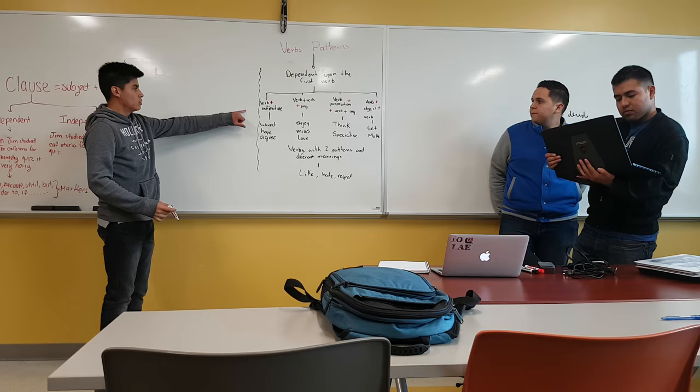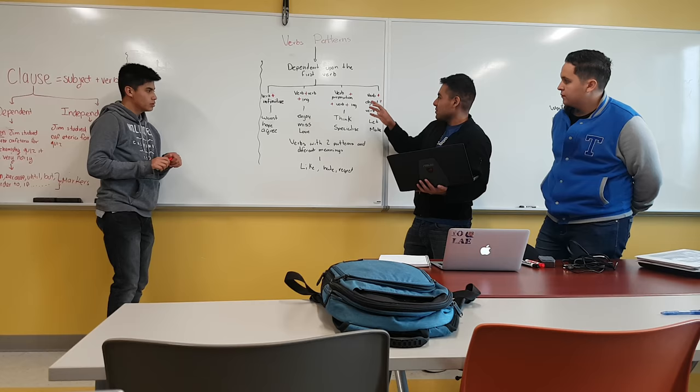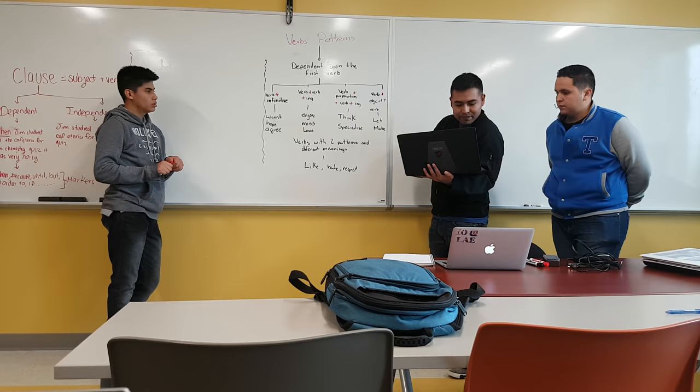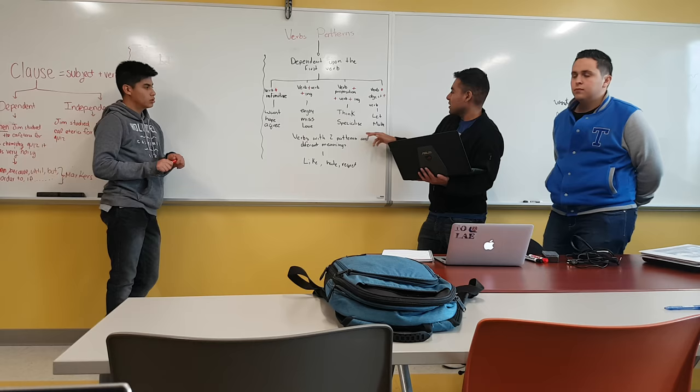For example, we have this verb pattern that is verb plus preposition plus verb plus '-ing'. We have to check the first verb, and depending on the verb, that determines the preposition. For example: 'Michael is thinking about cooking dinner.' And another can be: 'He is specialized in helping children.'